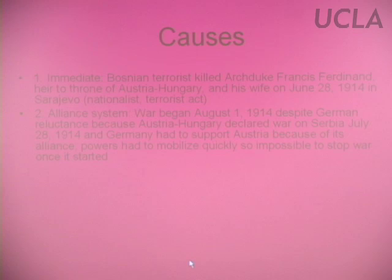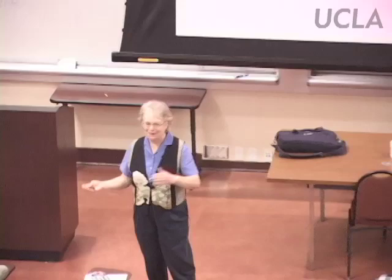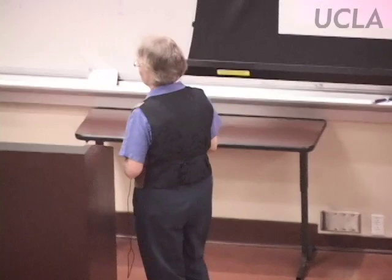Even worse, because of the alliance system and because of the amount of time it takes to mobilize troops, there is preemptive mobilization. Russia is allied with Serbia. When Serbia is attacked by Austria, Russia begins to mobilize, even without having declared war, just in case there is a war. Germany then feels it must mobilize because Russia has mobilized, and even before war has been declared by all the powers, everyone is ready to fight one.